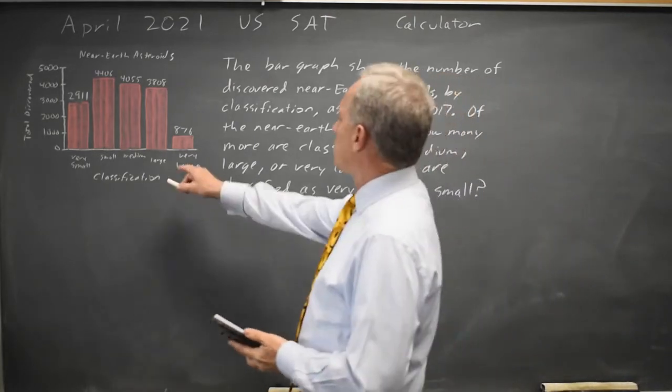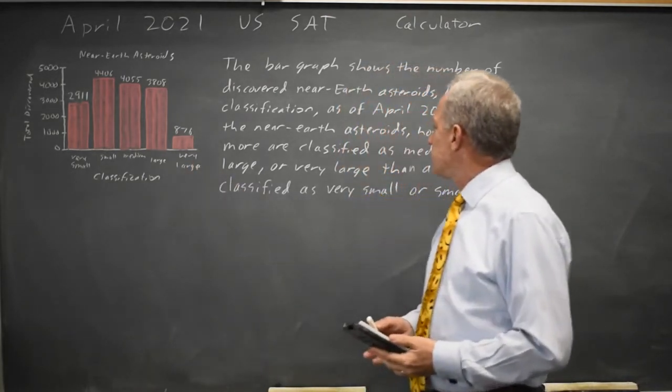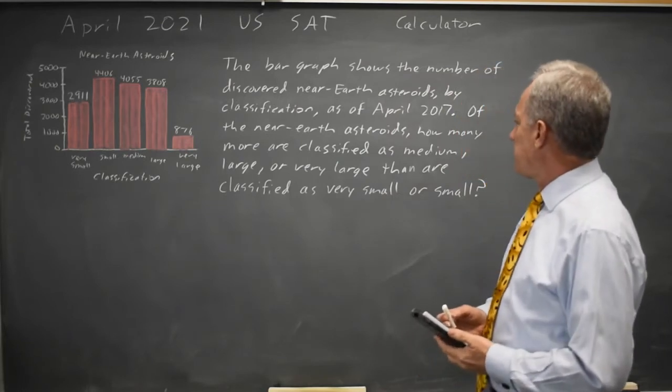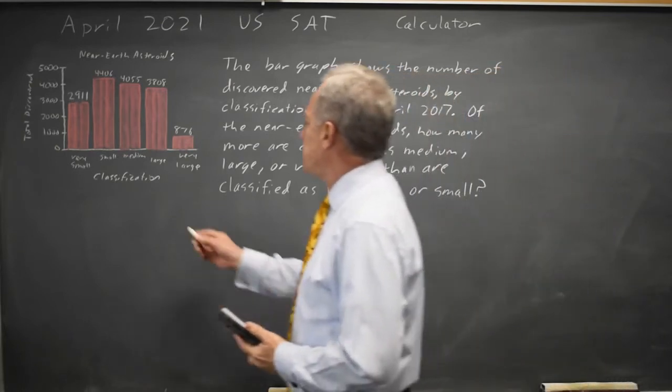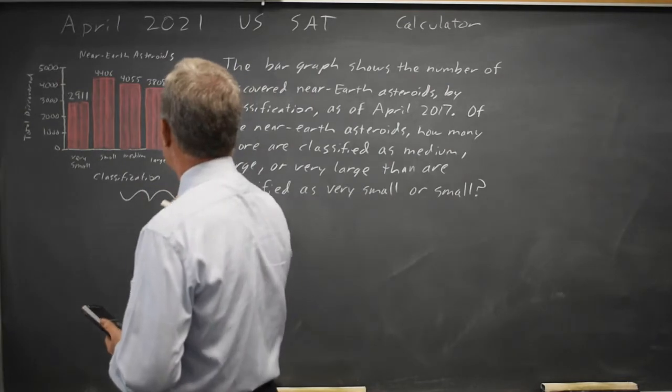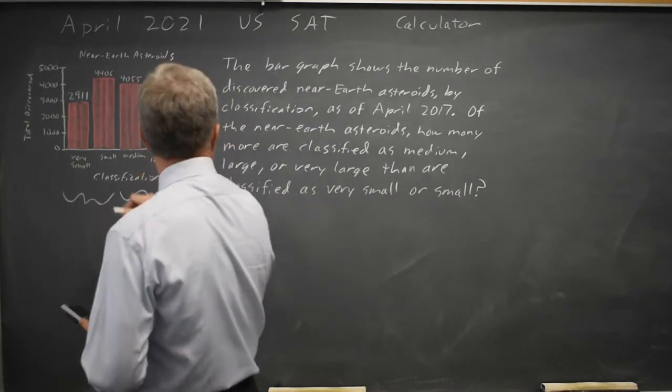The College Board gives us a bar graph and asks for how many more are classified as medium, large, or very large than are classified as very small or small.